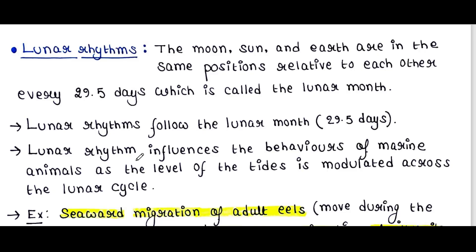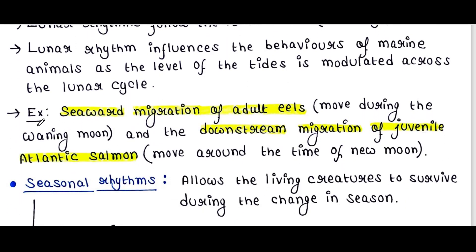Lunar rhythm influences the behaviors of marine animals as the level of the tides is modulated across the lunar cycle. Examples include the seaward migration of adult eels, which move during the waning moon, and the downstream migration of juvenile Atlantic salmon, which move around the time of the new moon.